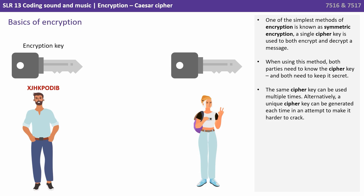One of the simplest methods of encryption is known as symmetric encryption. A single cipher key is used to both encrypt and decrypt a message. When using this method both parties need to know the cipher key and both need to keep it secret. The same cipher key can be used multiple times.